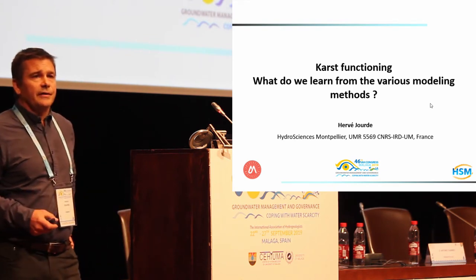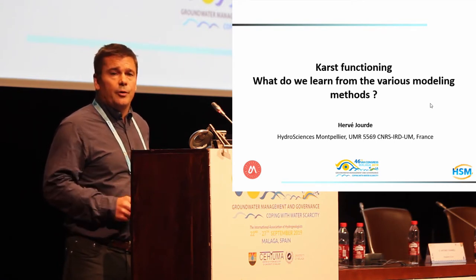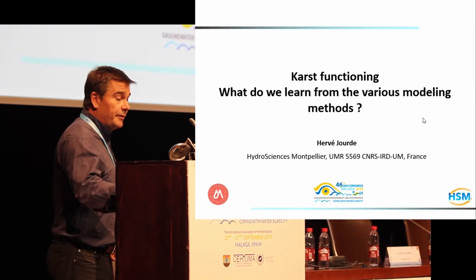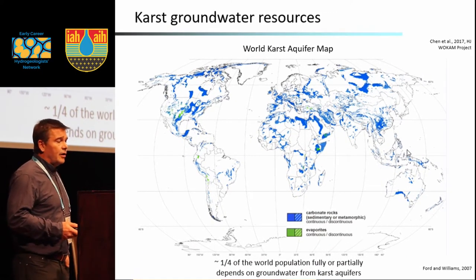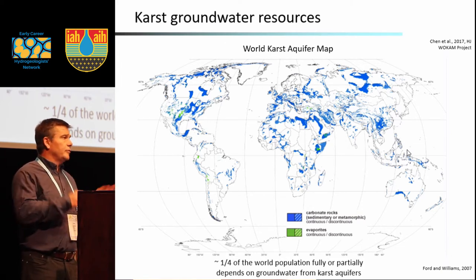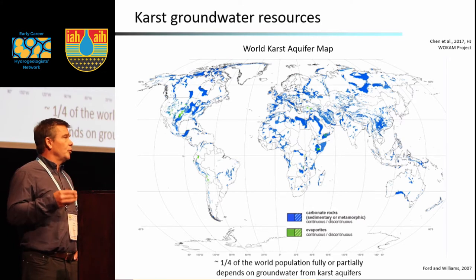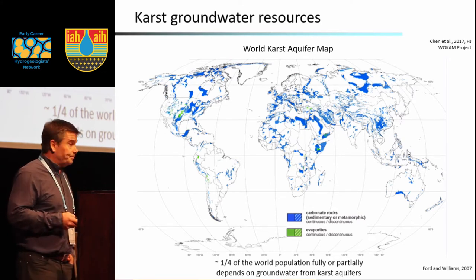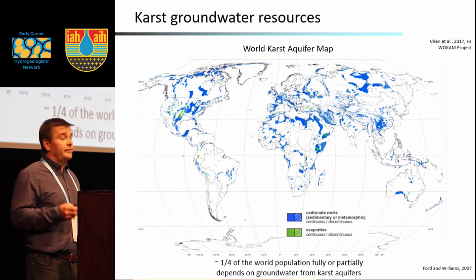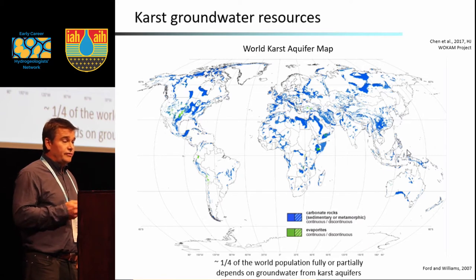The karst is a complex structure and understanding the functioning of such a medium is not easy. There are large numbers of modeling tools, and the objective of this talk is to understand what we can learn from these various modeling methods. Looking at karst groundwater resources around the world, the karst landscapes are spread all over the world and are important because they provide water for about 25 percent of the world population. In these areas, there are also risks related to karst hazards such as sinkholes and dissolution processes.